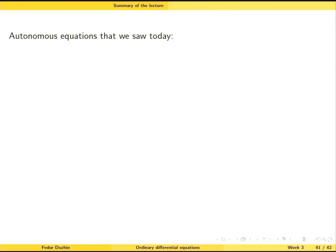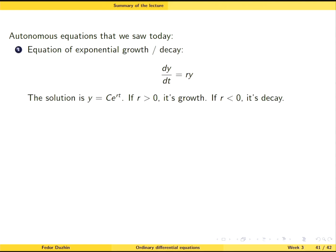Let us summarize what we've learned today. We have seen a number of autonomous equations. Recall that an autonomous equation is an equation of the form where the left-hand side is the derivative of the unknown function, and the right-hand side is some expression of the unknown function — the dependent variable. So t, the independent variable, is not present in the equation.